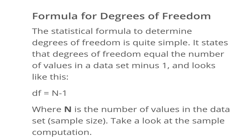Where n is the number of observations or number of values in the data — that is, the sample size. For example, if the sample size is 15, your degree of freedom is 15 minus 1, which is 14. So the formula is df = n minus 1, where n is the sample size.